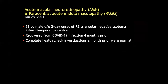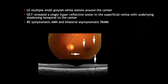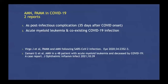In January this year a 32-year-old male complained of sudden onset of scotoma in his right eye for three days. He had recovered from COVID-19 four months prior and all investigations were negative. There was a deep retinal grayish-white lesion in the right eye corresponding to outer retinal layer disruption on OCT. Additionally, there were hyper-reflective lesions in the superficial retina on OCT with underlying shadowing. Similar lesions were seen in the other eye. He appeared to have right eye symptomatic AMN and bilateral asymptomatic PAMM. There are only two reports of these lesions in association with COVID-19 infection.